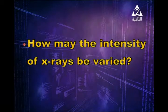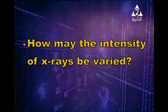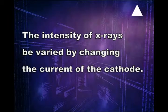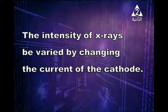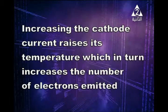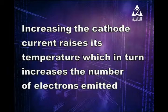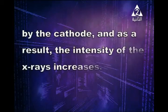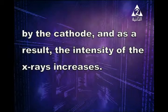How may the intensity of X-rays be varied? The intensity can be changed by varying the current flowing through the cathode. Increasing the cathode current raises its temperature, which in turn increases the number of electrons emitted from the cathode. As a result, the intensity of the produced X-rays increases.